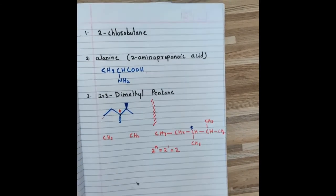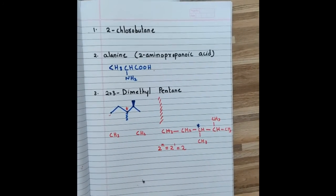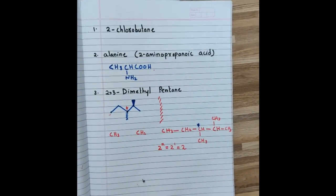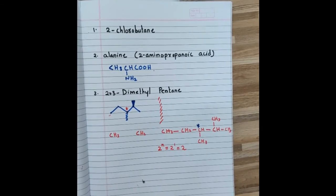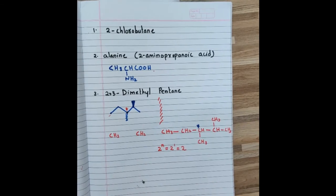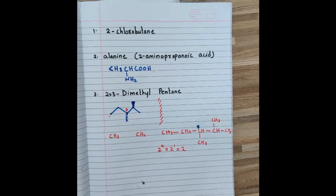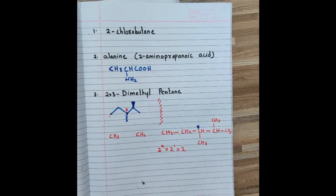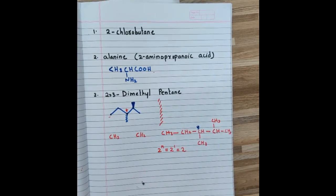I have emphasized optical isomerism so much because it helps us understand reaction mechanisms. After this, we are going to study the reactions of alkyl halides, and the optical activity of some halogen derivatives will help us understand the mechanism of some important reactions. Let's finish today's lecture here and we will meet in the next lecture. Until then, be safe.